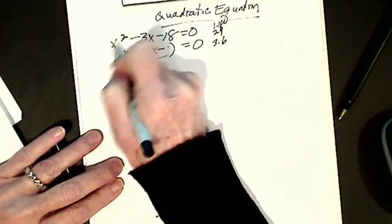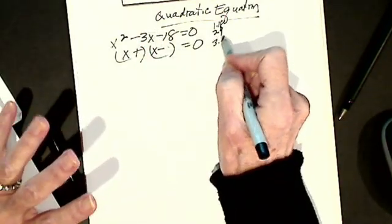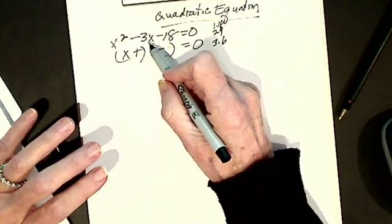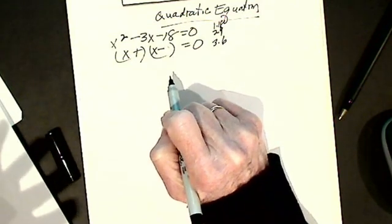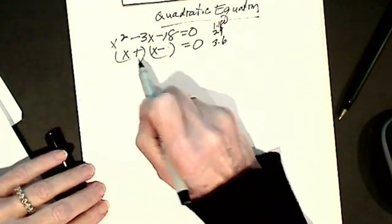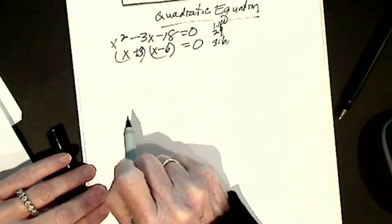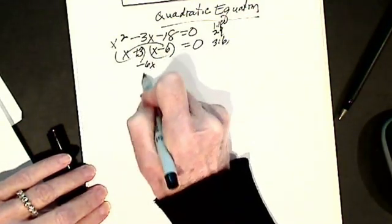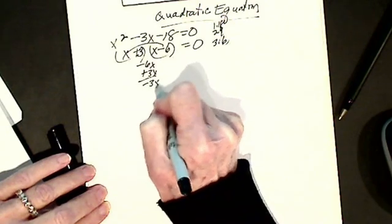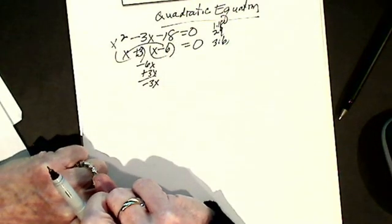If I have no coefficient in front — which I don't, except a coefficient of 1 — that's when I can ask: which pair do I add or subtract to get negative 3? It's got to be 6 and 3. It matters where I put it because I have different signs. I want to get minus 3, so I take my bigger number, which is the 6, and put it with the sign of the middle term. That way when I FOIL, I'll get minus 6x plus 3x, giving me minus 3x. x times x is x squared, my last term is minus 18 — everything is factored right.